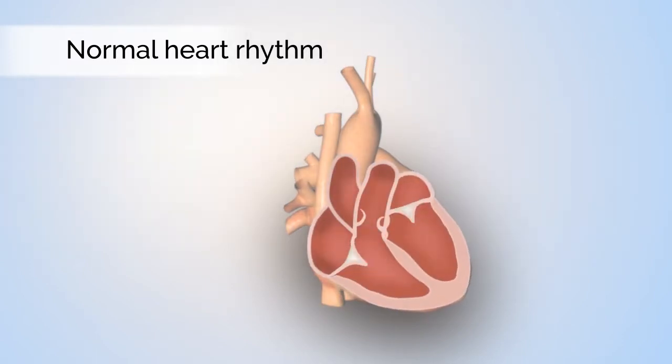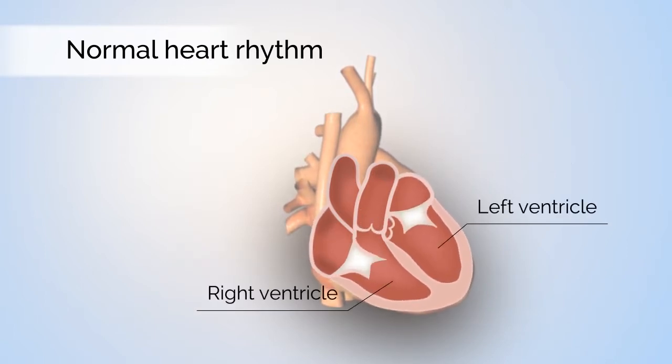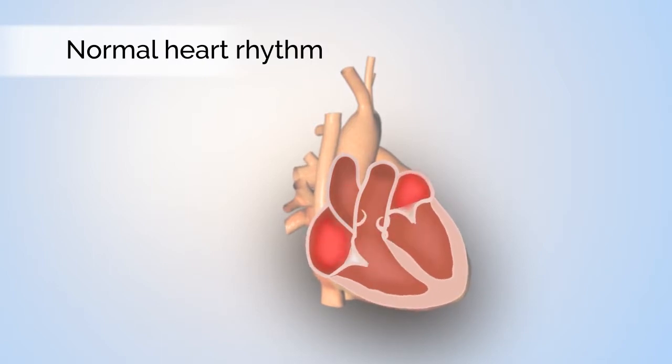The heart has four chambers, two on top called atria and two on bottom called ventricles. The atria pool the blood and send it down to the ventricles, which are the main pumping chambers.